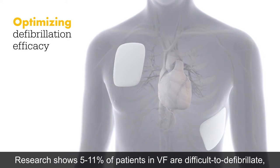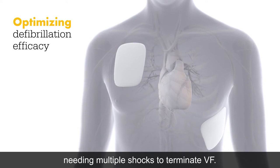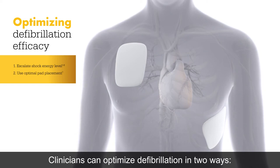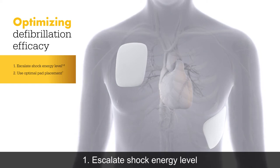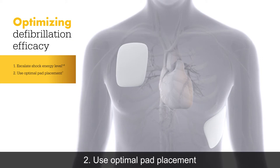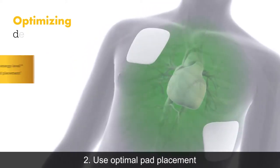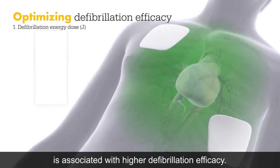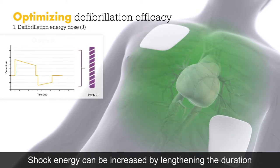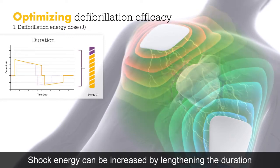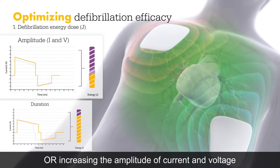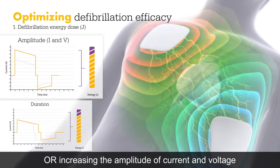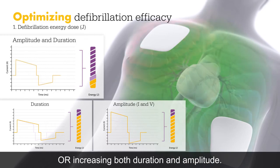Research shows 5 to 11 percent of patients in VF are difficult to defibrillate, needing multiple shocks to terminate VF. Clinicians can optimize defibrillation in two ways: first, escalate shock energy level; second, use optimal pad placement. Higher defibrillation energy, or shock dose, is associated with higher defibrillation efficacy. Shock energy can be increased by lengthening the duration, increasing the amplitude of current and voltage, or increasing both duration and amplitude.